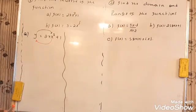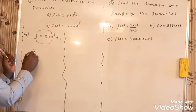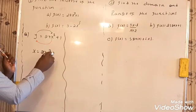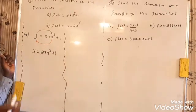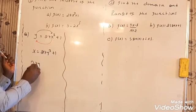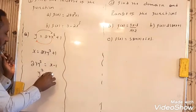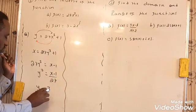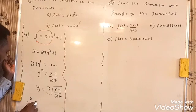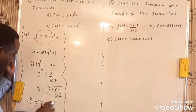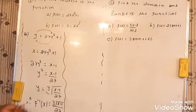In order to find the inverse of this problem, let's exchange the positions of both x and y. That is: x = 27y³ + 1. Then, solving for y: 27y³ = x − 1, so y³ = (x − 1)/27, and therefore y is the cube root of (x − 1)/27. Therefore, f⁻¹(x) = ∛((x − 1)/27). This is the inverse of this function.